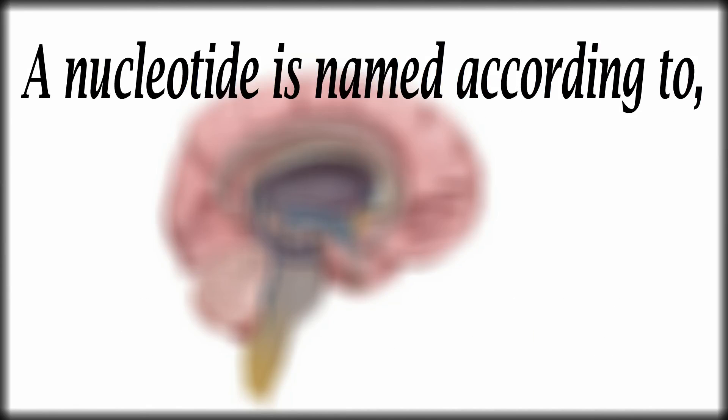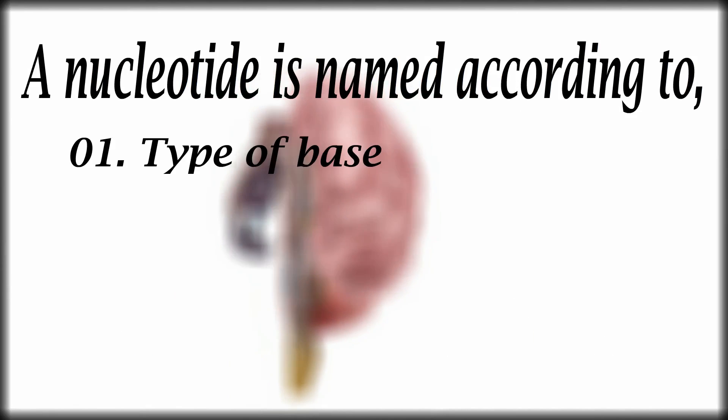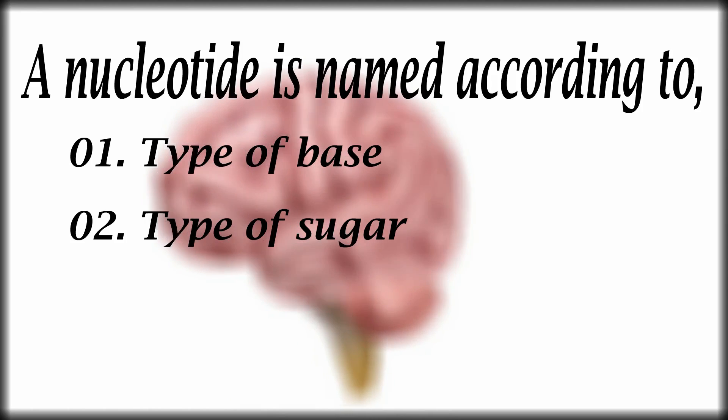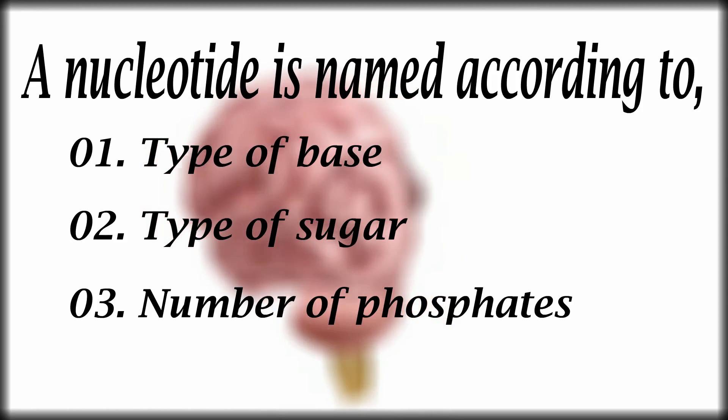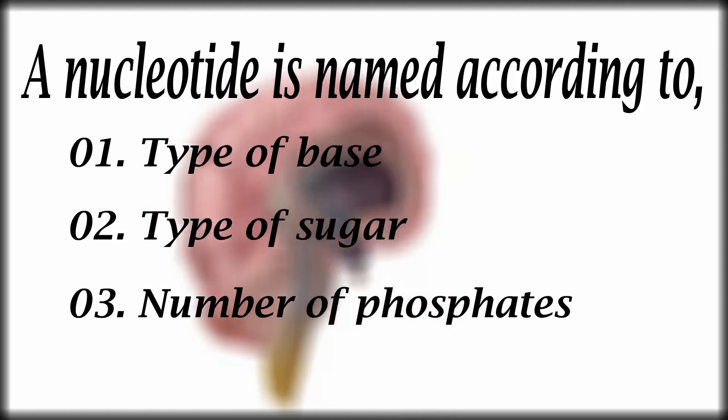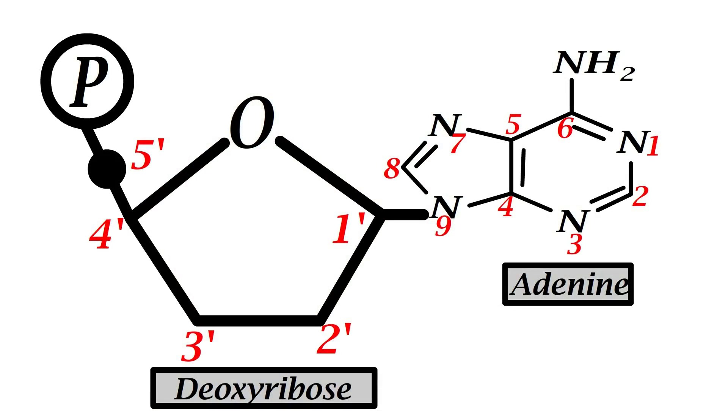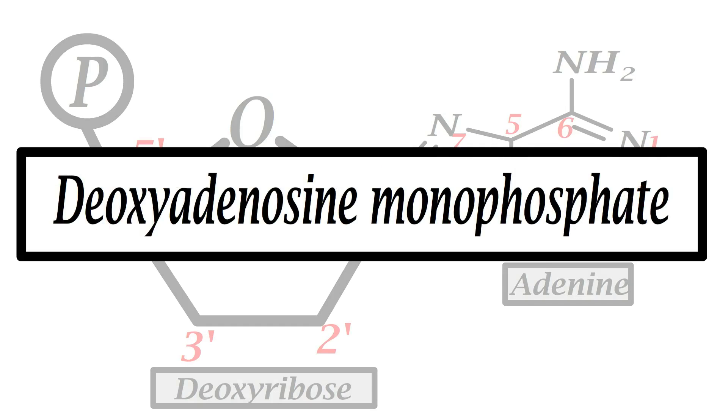A nucleotide is named according to the type of base, sugar, and number of phosphates it has. For example, this nucleotide here consists of a deoxyribose, an adenine base, and one phosphate group, so it is labeled as deoxy adenosine monophosphate.